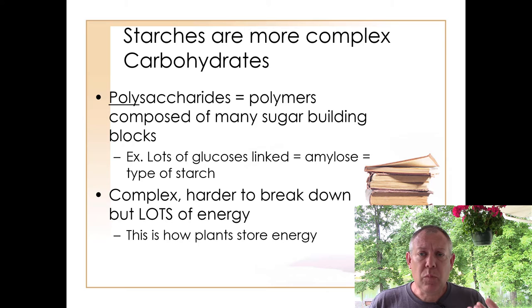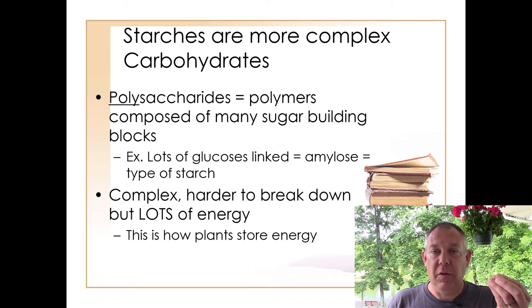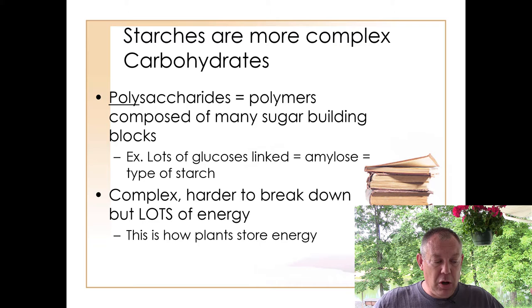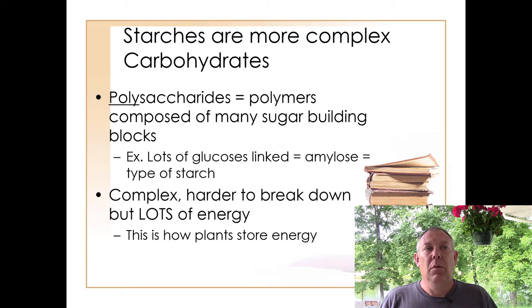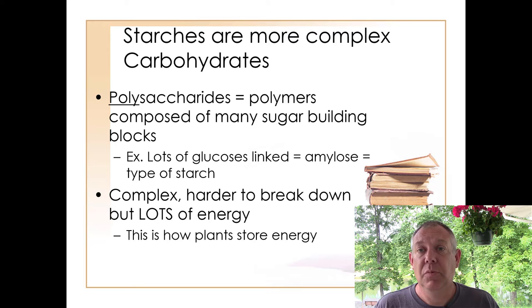If you take many glucose molecules and stitch them together in a large chain, that's amylose — starch. The simple sugar is easy to digest, but when you put a bunch together you get a very long molecule, sometimes straight and sometimes with branches. This is how plants store energy. When plants have excess energy they store it as starch — lots of glucose molecules joined into these long complex carbohydrates.